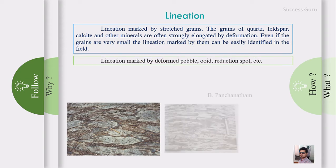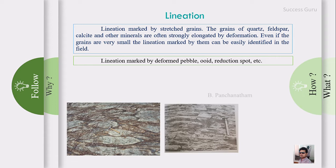The third stage is lineation marked by deformed pebbles, ooids, and reduction spots. If the stress gets prolonged and increases, even bigger grains like pebbles or oolites tend to deform and show some sort of orientation. This is called lineation marked by deformed pebbles, oolites, reduction spots, etc.